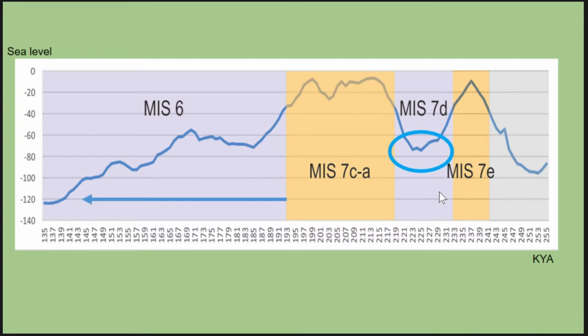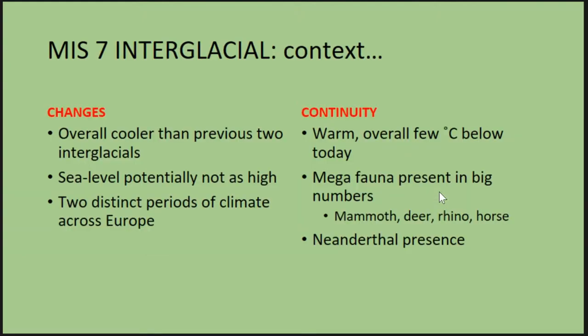Occupation continues well into the MIS 6 glacial period — an extreme cold period globally. The changes within MIS 7 itself feature two warm periods within an overall cooler interval. We're not seeing the higher sea levels of previous interglacials, and you have a more open landscape. Overall it's still a warm interglacial, so we still see Neanderthal presence, and we also have megafauna presence specifically in northwestern Europe.